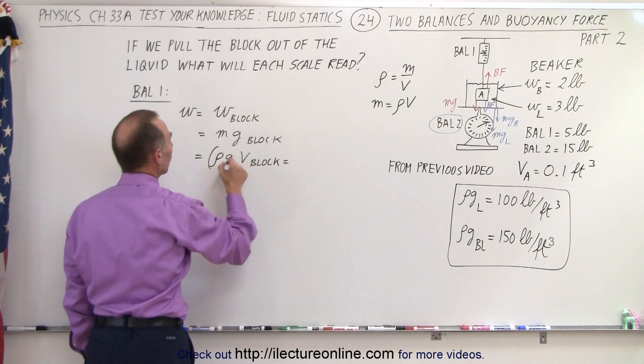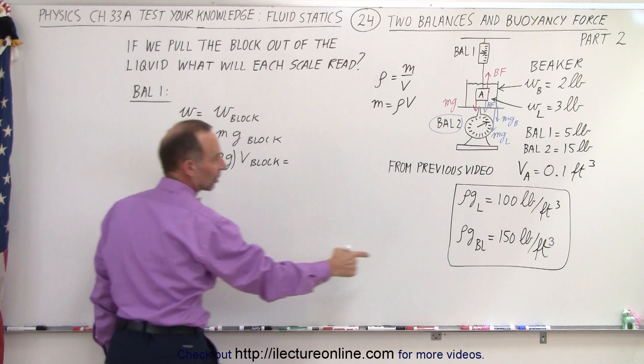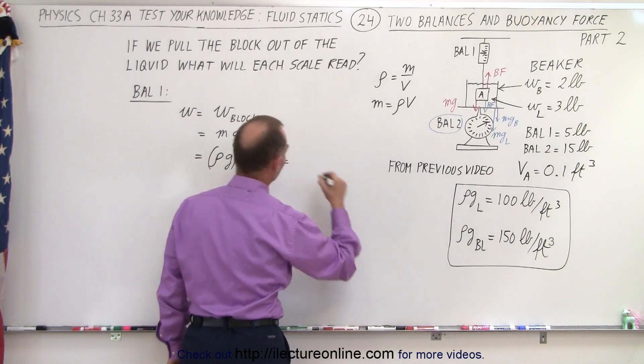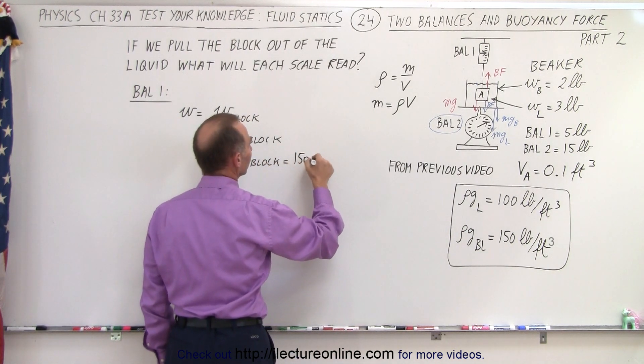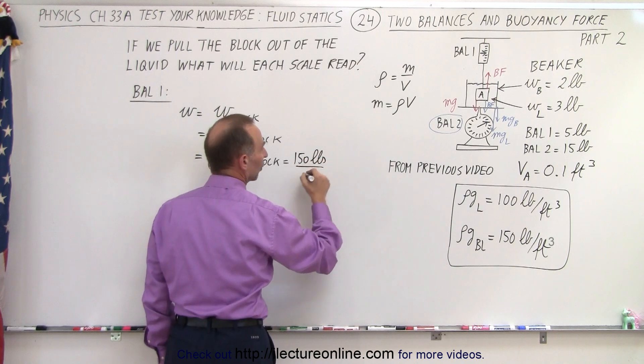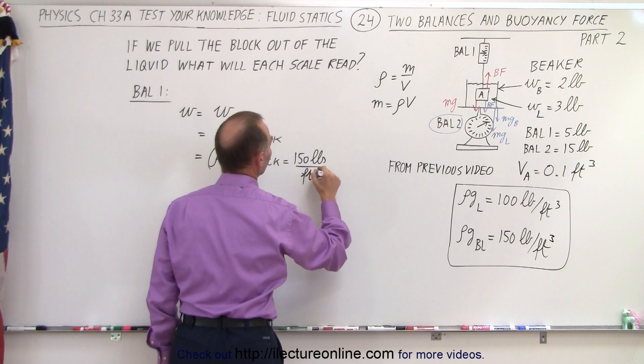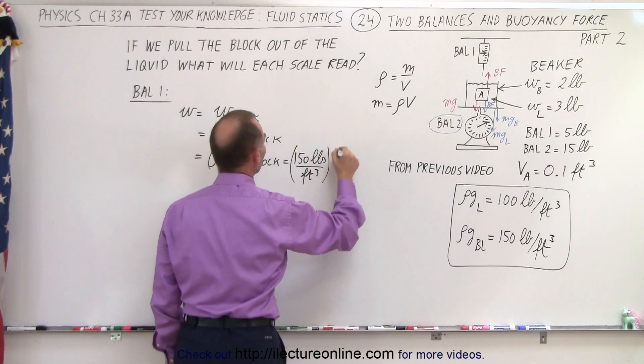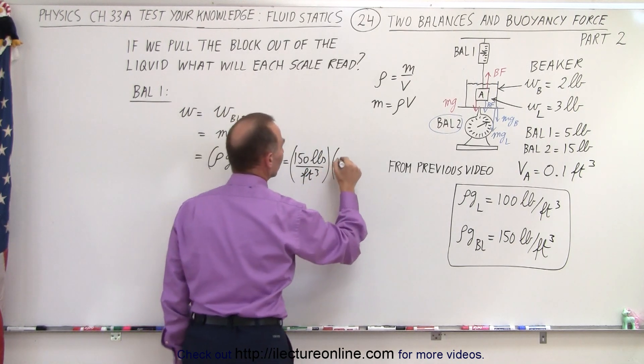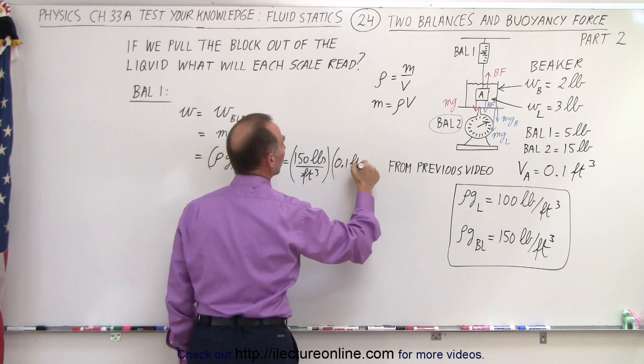All right this is the weight density of the block and the weight density of the block we found that to be 150 pounds per cubic foot. Cubic foot like that, and then we multiply that times the volume of the block which is 0.1 cubic feet.